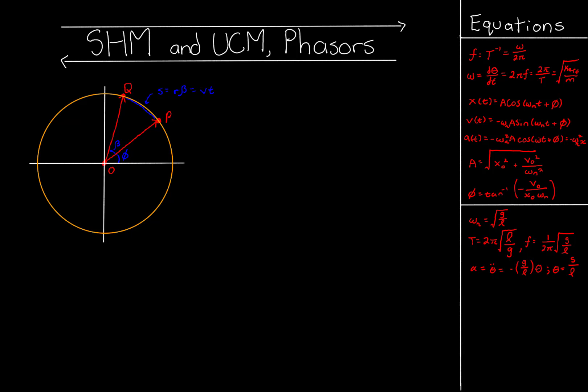The radius r is just the length of the phasor. The arc length r*beta is also equal to v*t, where v is the tangential speed along the curve, assumed constant because we're dealing with uniform circular motion. Time is just the t variable. So beta equals v*t over r.